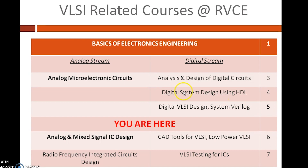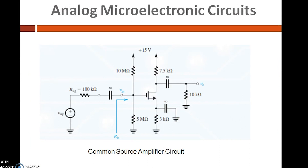From third semester onwards, courses are offered in both analog and digital streams of VLSI. In third semester, Analog Microelectronic Circuits is offered under the analog stream, covering the design and analysis of discrete analog circuits. You are familiar with this circuit — this is the circuit of a common source amplifier. The working of MOSFET, BJT and amplifiers using discrete elements are dealt in this course. This is a rigorous course which lays the foundation of analog IC design.